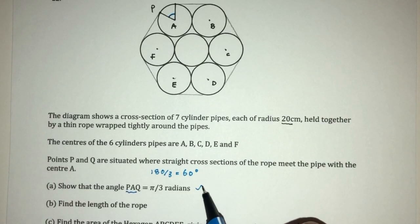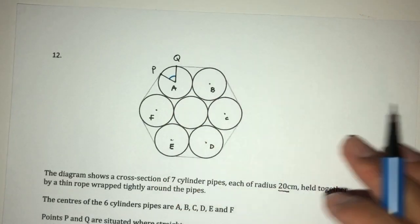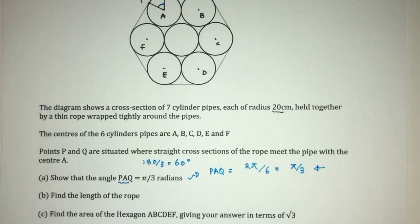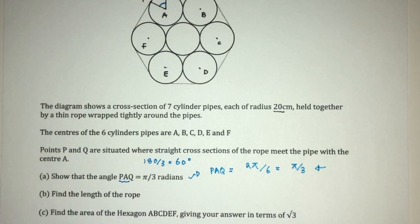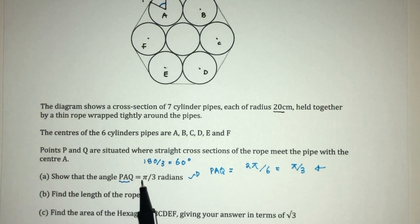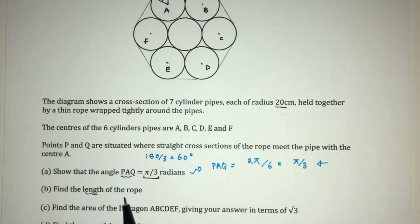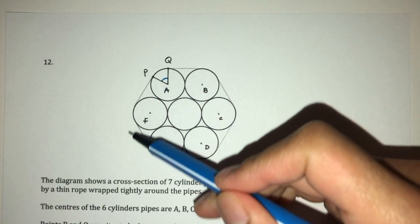You can write down the angle PAQ will be equal to 2π, which is the whole angle for the whole circle. And because we have six equal sectors, that will be divided by six, which is π by 3. Now, obviously, you can explain in words as well to help them understand how you derive the answer. That will be part one of the question. If you guys did not know part one, it is no big deal because you can use this angle to continue the questions either way. So, part B, we have to find the length of the rope. Length is basically around this shape. So, let's count.